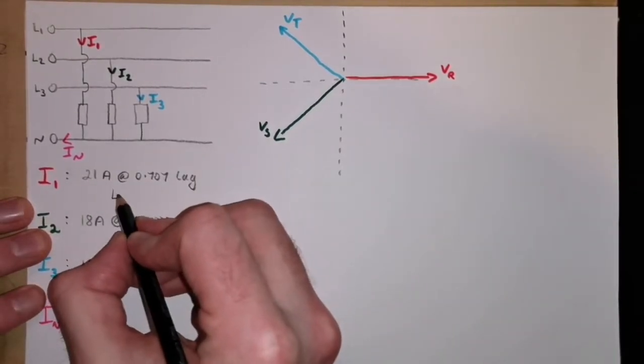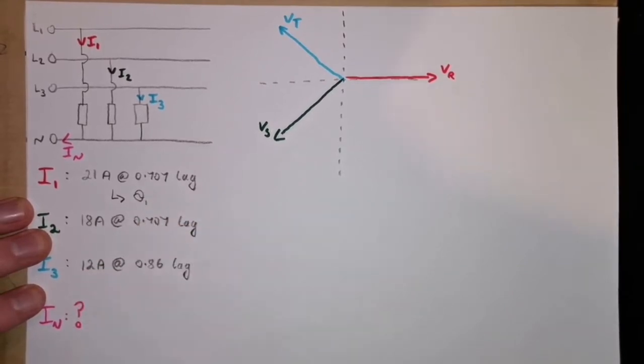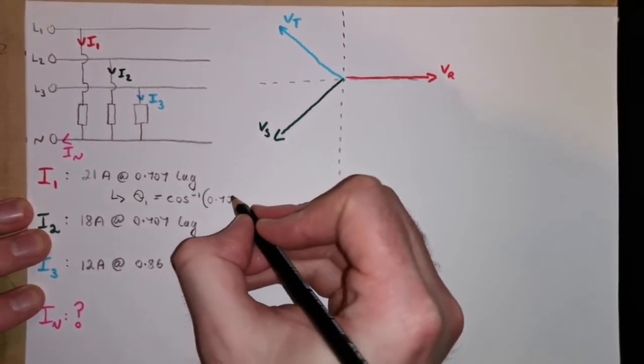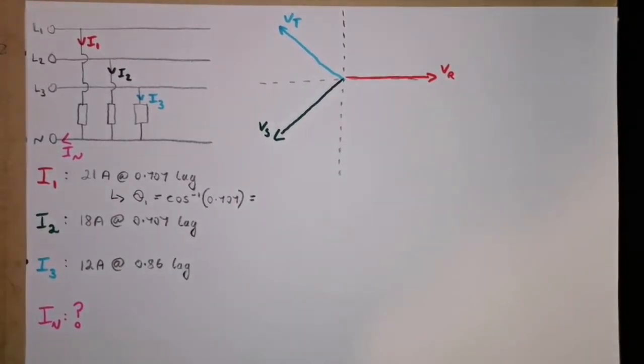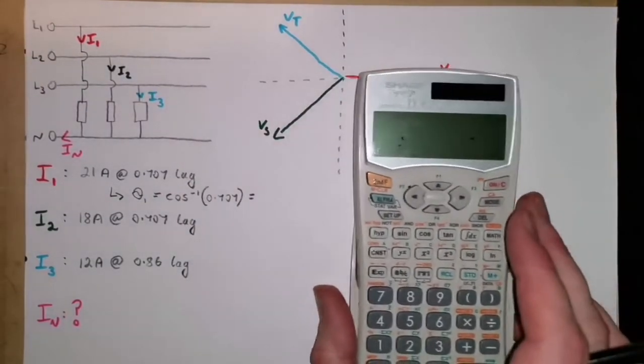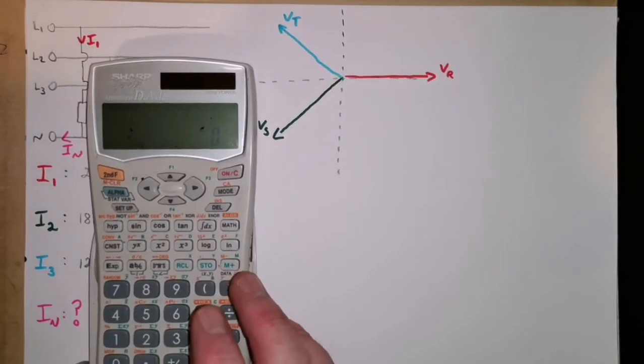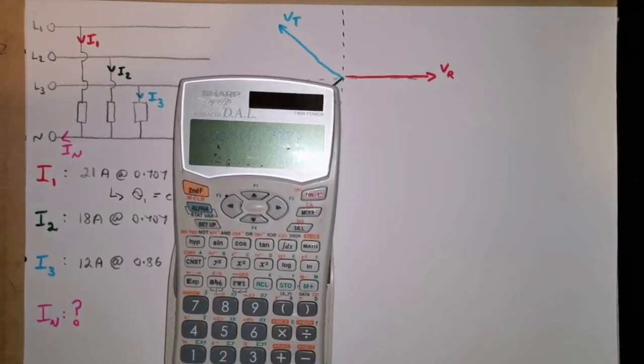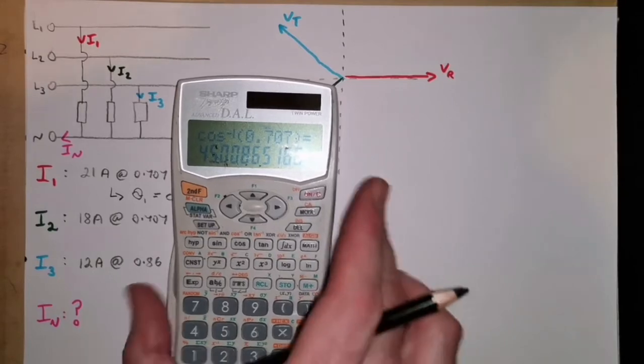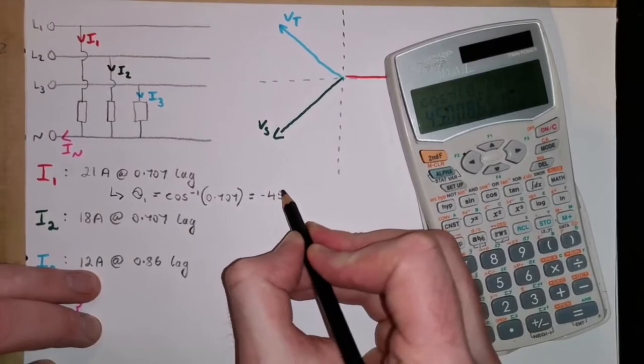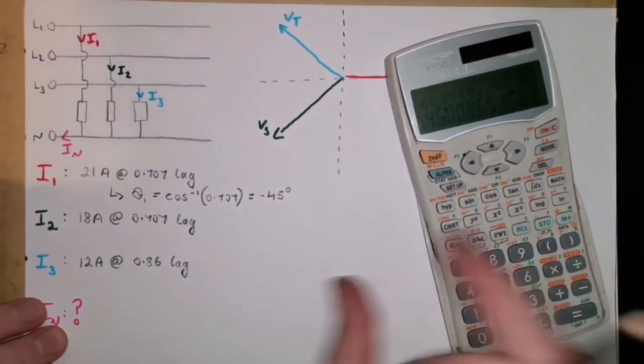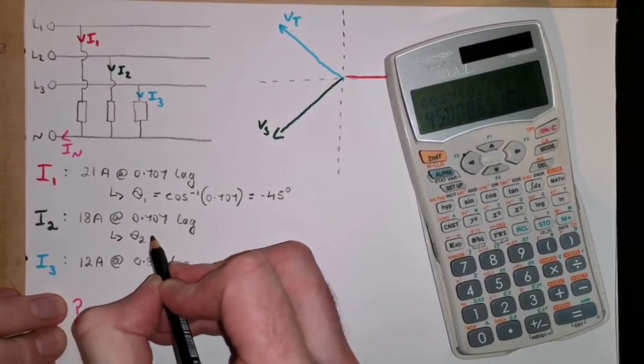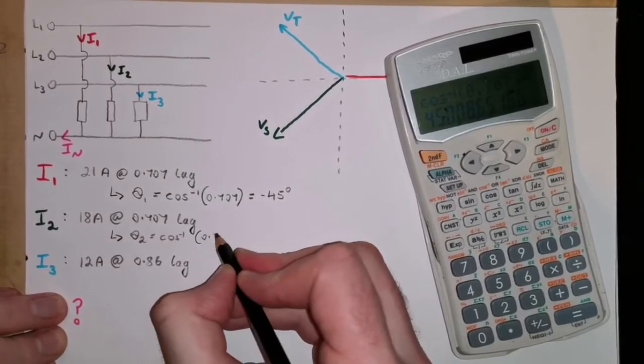For this first one here, we want to get the phase, we'll call it theta 1. It's the cosine inverse of our power factor, 0.707. If we pass it into our calculator, we get cosine inverse of 0.707, and it comes out at 45 degrees. Now, I'm going to put a minus in here as well, because it's a lagging power factor. We can work out the phase then for the remaining currents, so theta 2 cosine inverse of the same value. So, it too has the same phase, but we'll see how it differs because of the three-phase voltage in a moment.